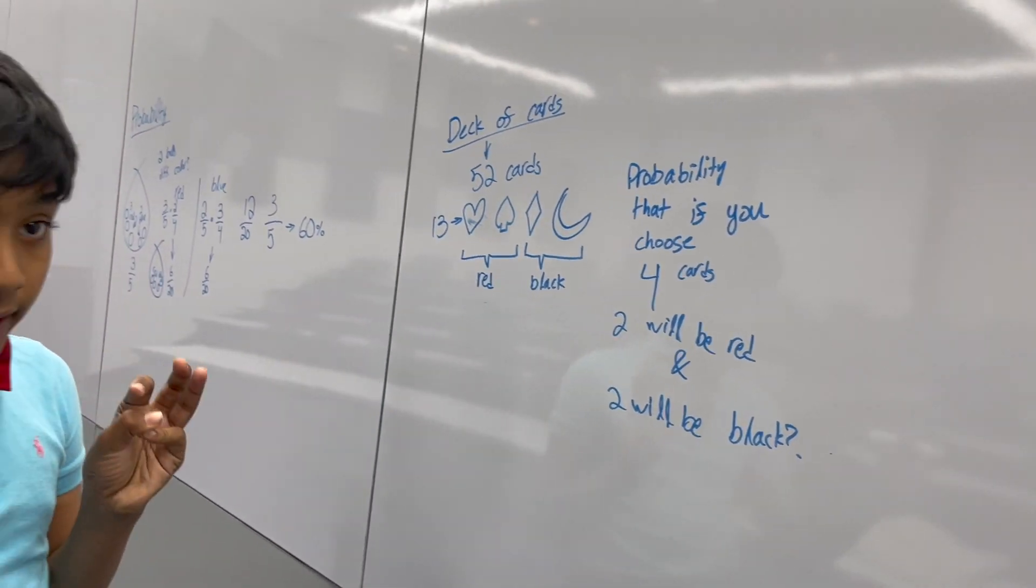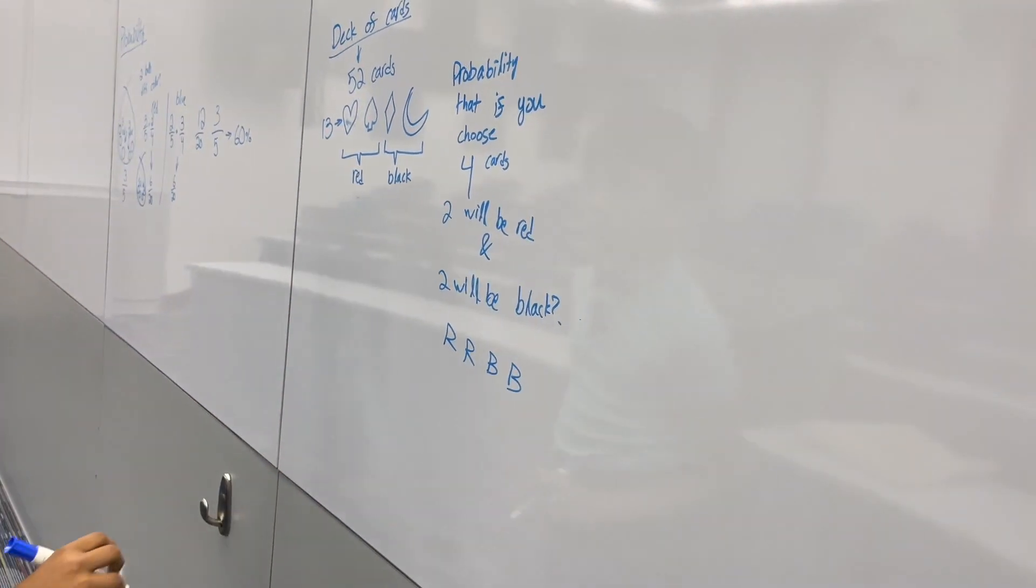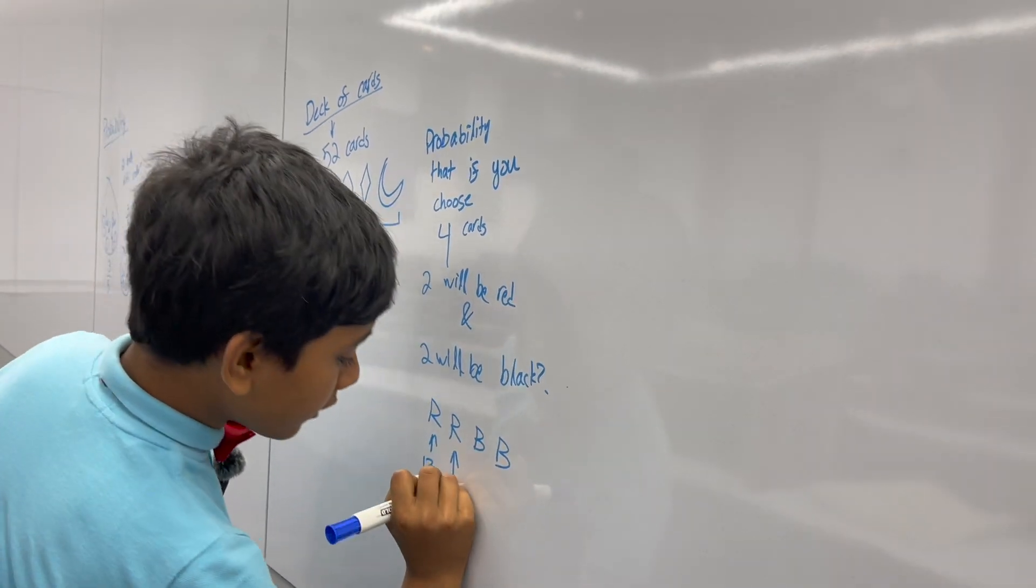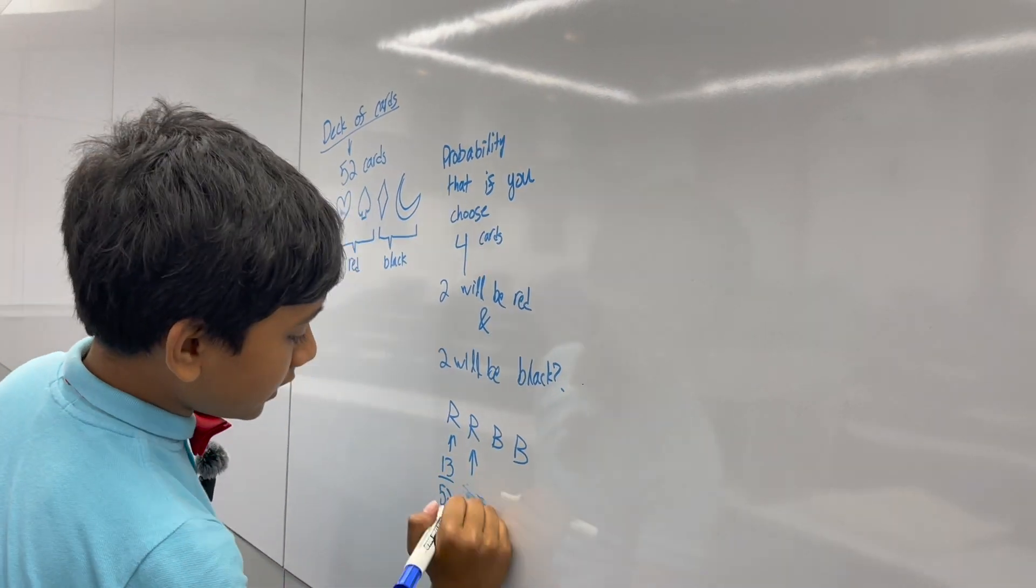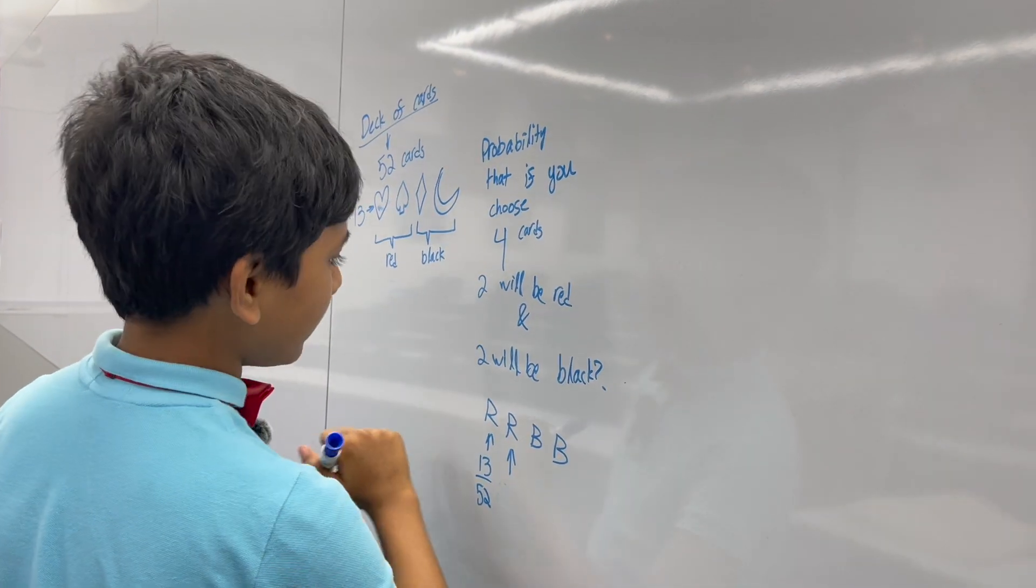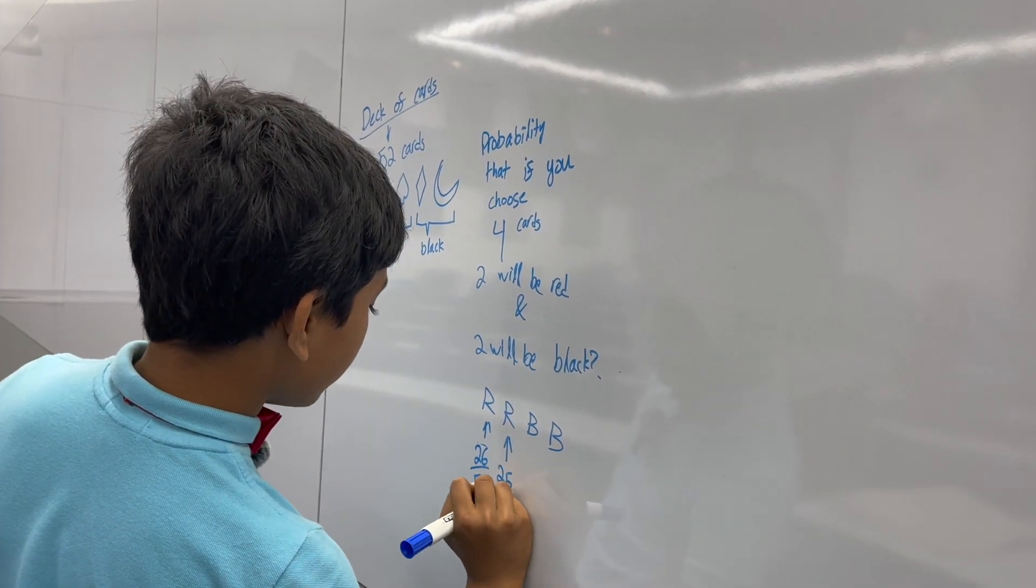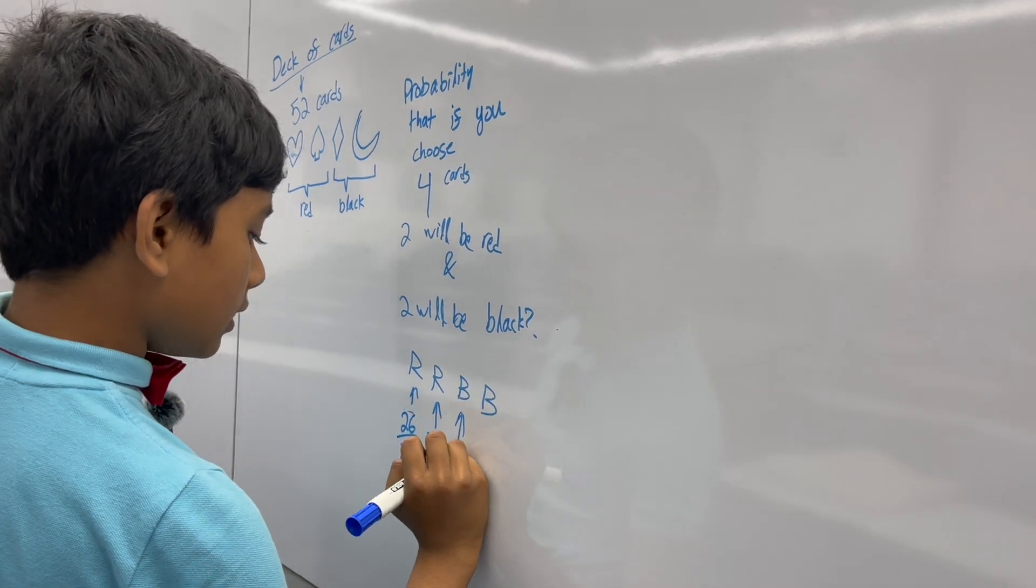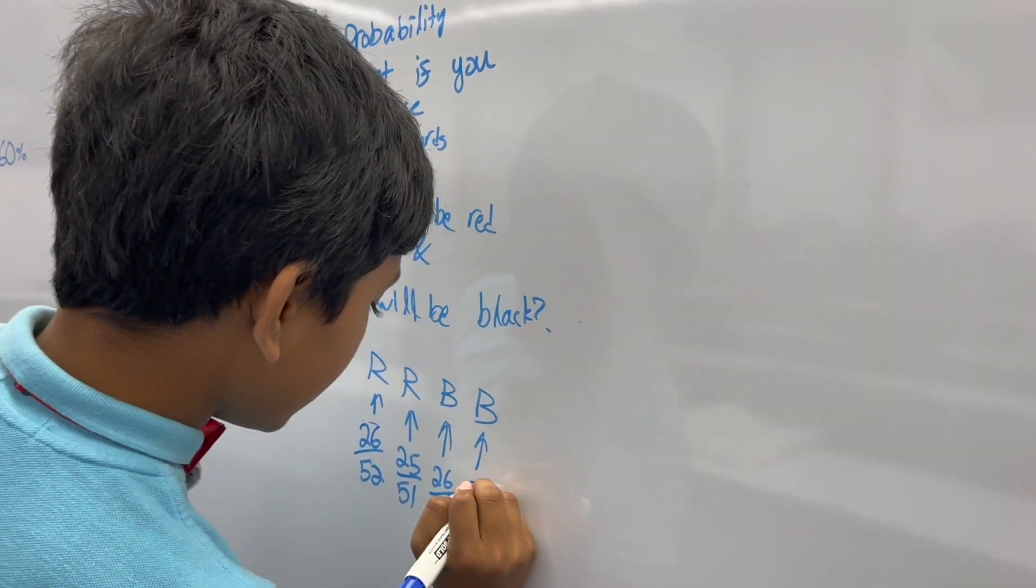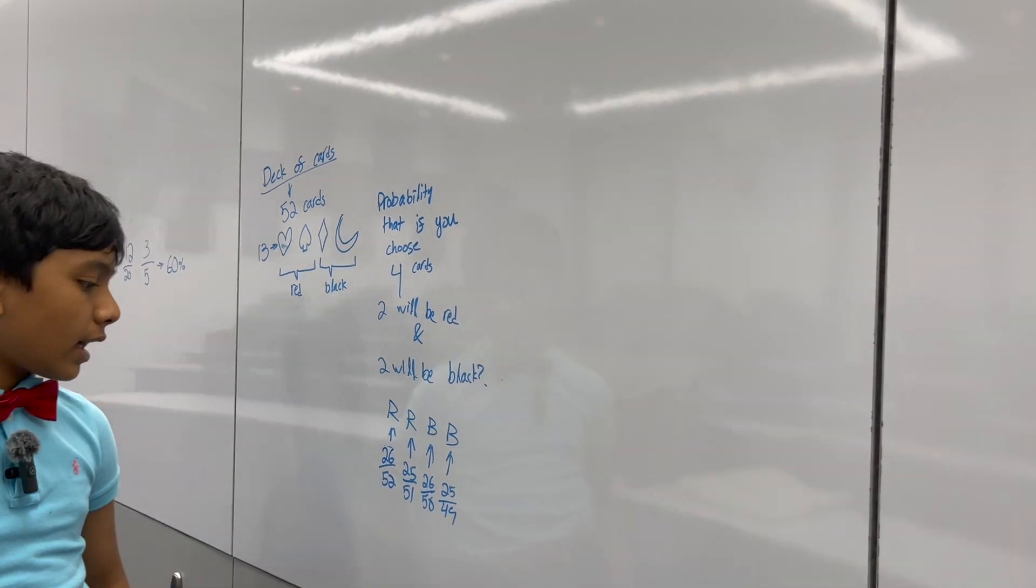Now, at first glance, you might think, well, is the chance of picking two reds, and then two blacks? So, that's thirteen out of fifty-two, twelve, uh, that's thirteen out of fifty-two, then, wait, no, thirteen out of fifty-two? I meant twenty-six out of fifty-two, twenty-five out of fifty-one, then, twenty-six out of fifty, and twenty-five over forty-nine. That's what you may think, but it's actually not that simple.